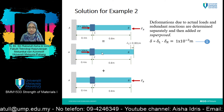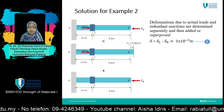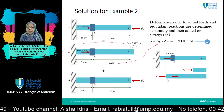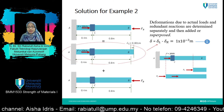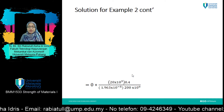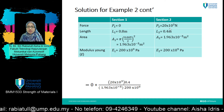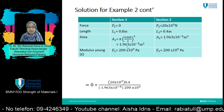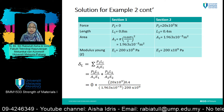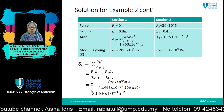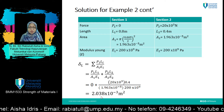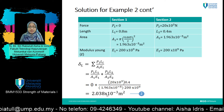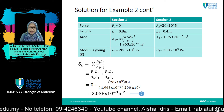Following the same steps as in Lecture 5, cut each section to find the value of forces in each section. After cutting, find the values of P1 and P2 for each section from the free body diagram. Substitute everything into the table, then apply the formula delta equals PL over AE. From there, you will get delta_L equals 2.038 times 10 to the power of negative 3 meters. This is equation 2.